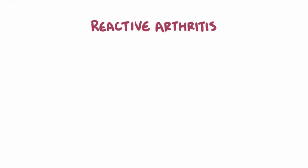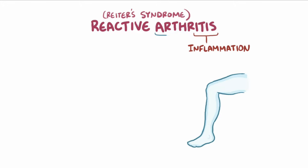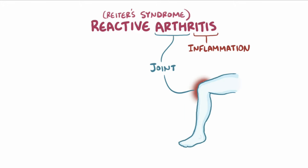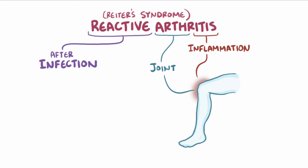Reactive arthritis, formerly known as Reiter's syndrome, is inflammation of a joint which usually develops after an infection, and that infection is typically a sexually transmitted disease or gastroenteritis.